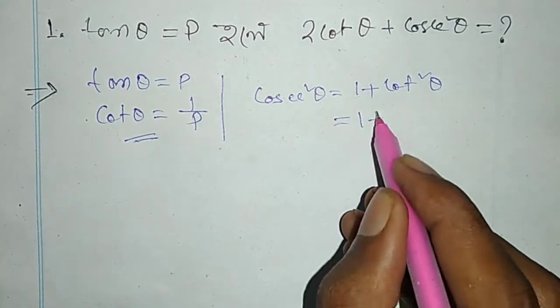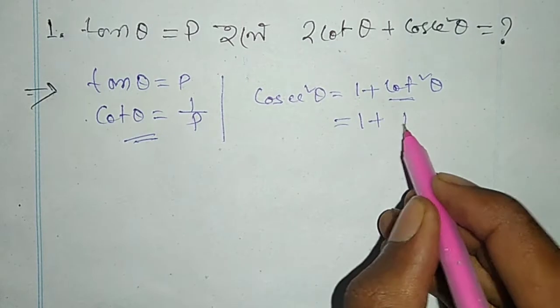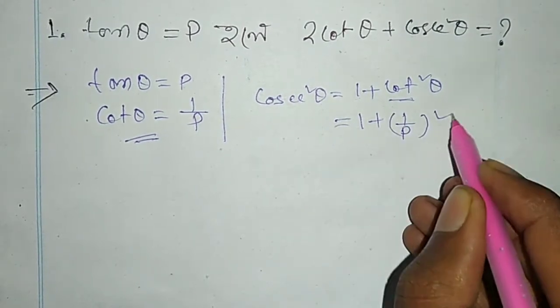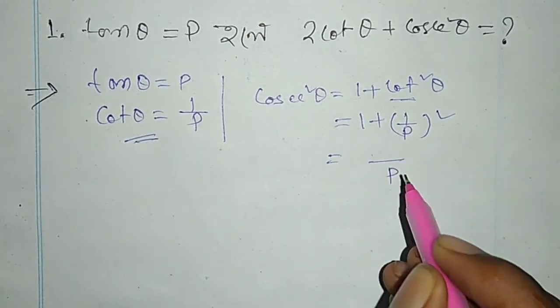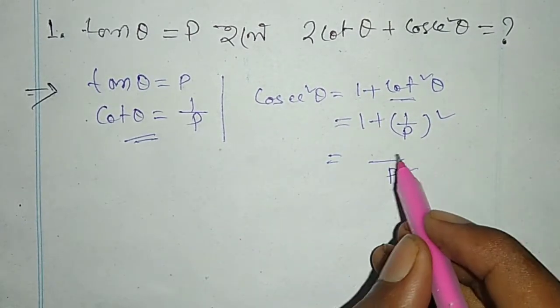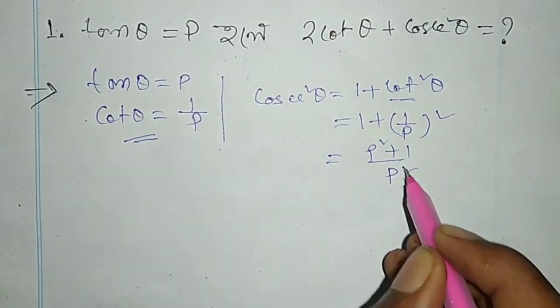1 divided plus cot θ. 1 by p, 1 by p, that whole square equal to p square. And also we will have p² + 1.